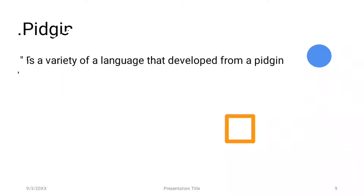Creole is a variety of language developed from pidgin. When the pidgin is fully developed in a community as a native language, we call it creole. It is used as a first language by a population of native speakers. Creole is a stable, natural language developed from a mixture of different languages. The process of development from pidgin to creole is called creolization.